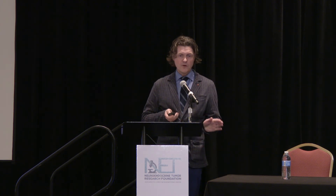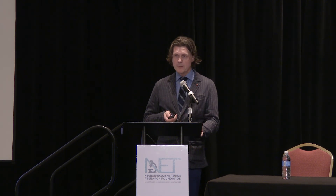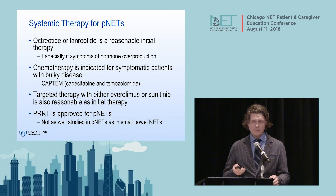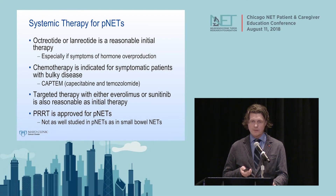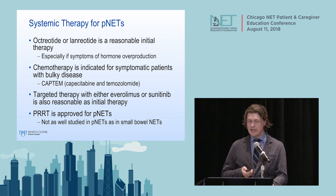For pancreatic neuroendocrine tumors, octreotide or lanreotide are reasonable as first-line therapy. Chemotherapy can be used to treat very bulky, painful tumors. We also have targeted treatments: everolimus, sunitinib, and of course PRRT.